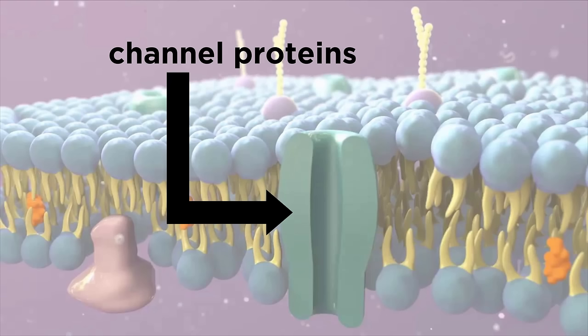Some of these are channel proteins which float about in the sea of phospholipids and facilitate the movement of some kind of molecule across the membrane. Let's learn about these proteins and the different ways that substances can move in or out of the cell.